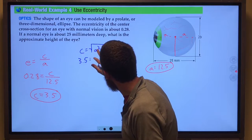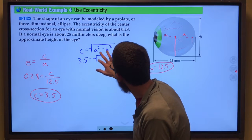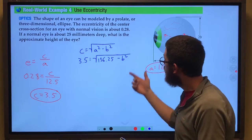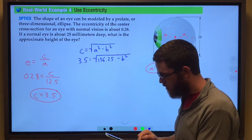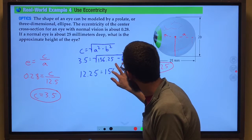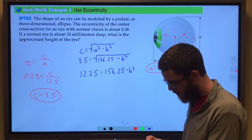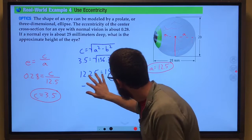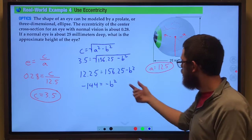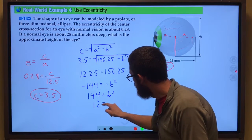C is 3.5. A squared, 12.5 squared, gives us 156.25. We're going to be subtracting away b squared. We square both sides. 3.5 squared gives us 12.25 equals 156.25 minus b squared. So that's 144 does equal b squared. B must be 12.